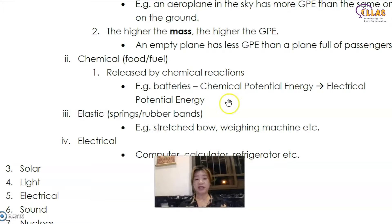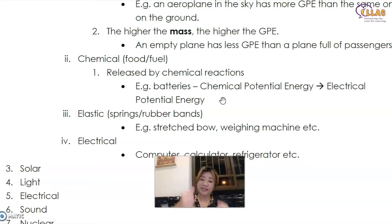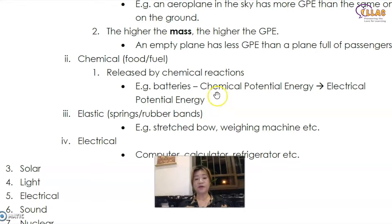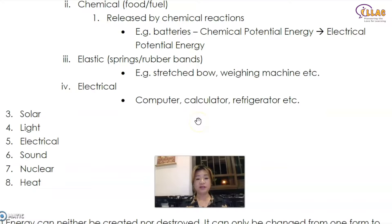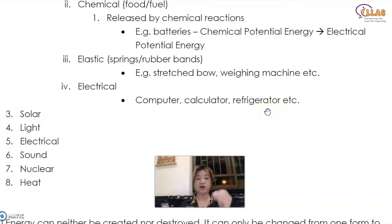There is also elastic potential energy — the more you pull, the more the elastic potential energy, and when you release it, it releases in the form of kinetic energy. Examples include a stretched bow and arrow and a wane machine. Electrical potential energy — as mentioned with the drill — computers, calculators, and refrigerators all convert electrical potential energy into kinetic energy and into other forms of energy like light energy and sound energy.